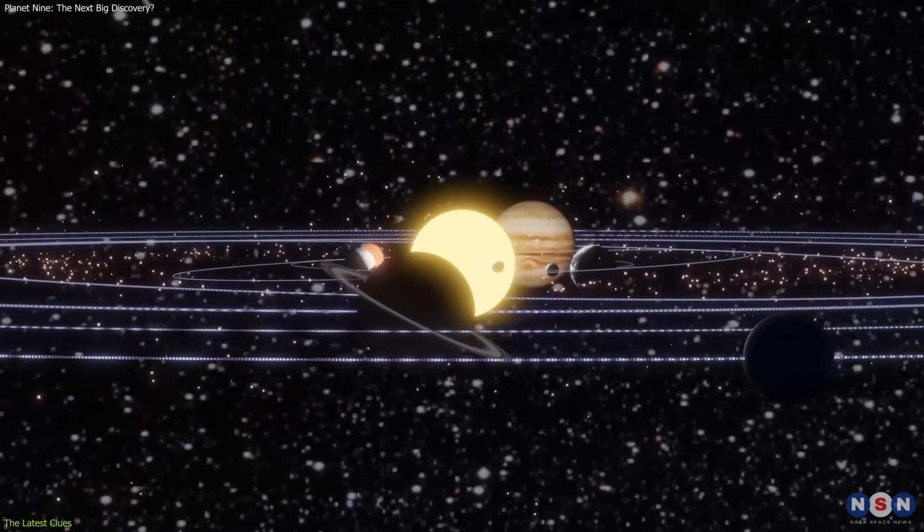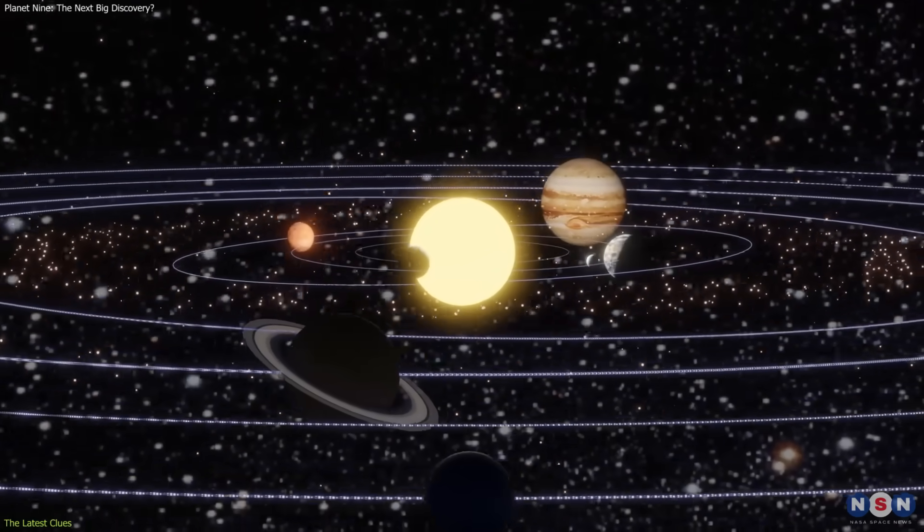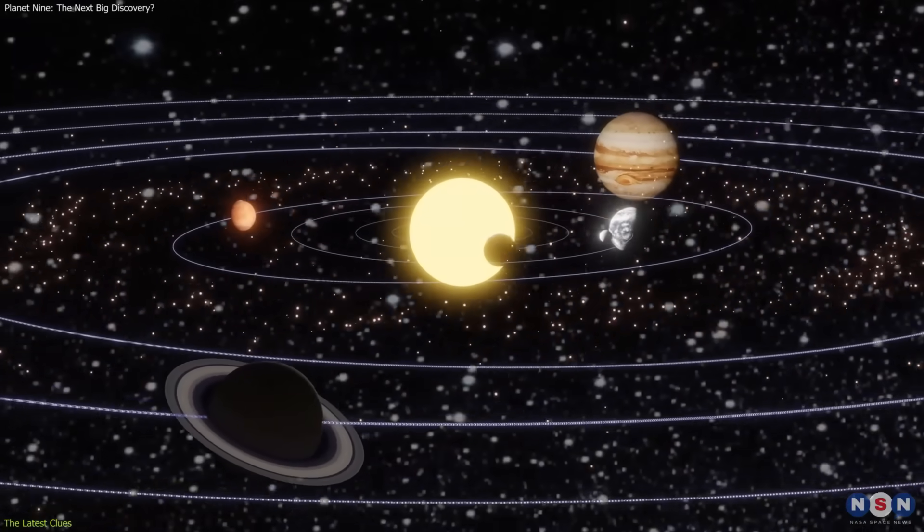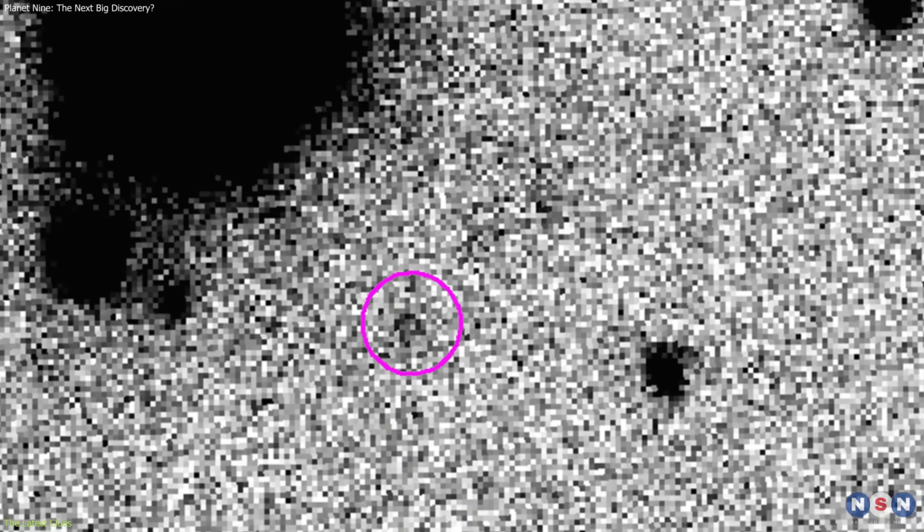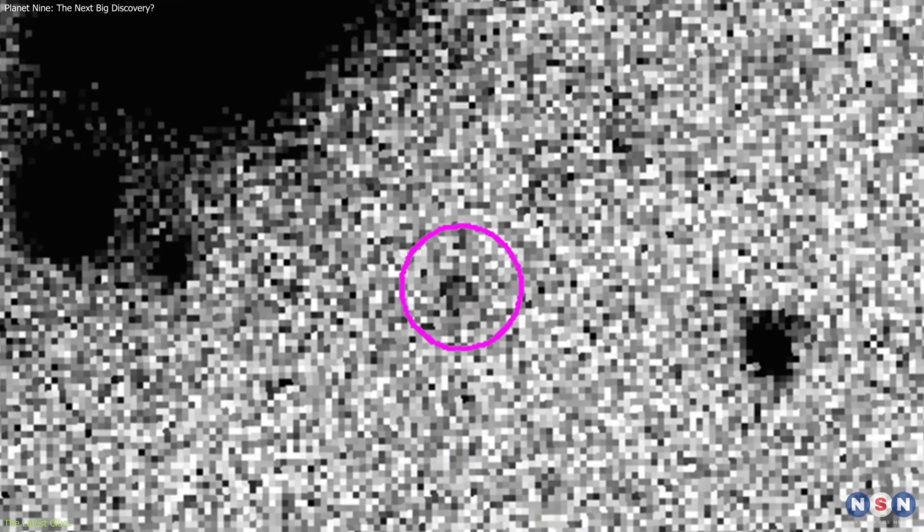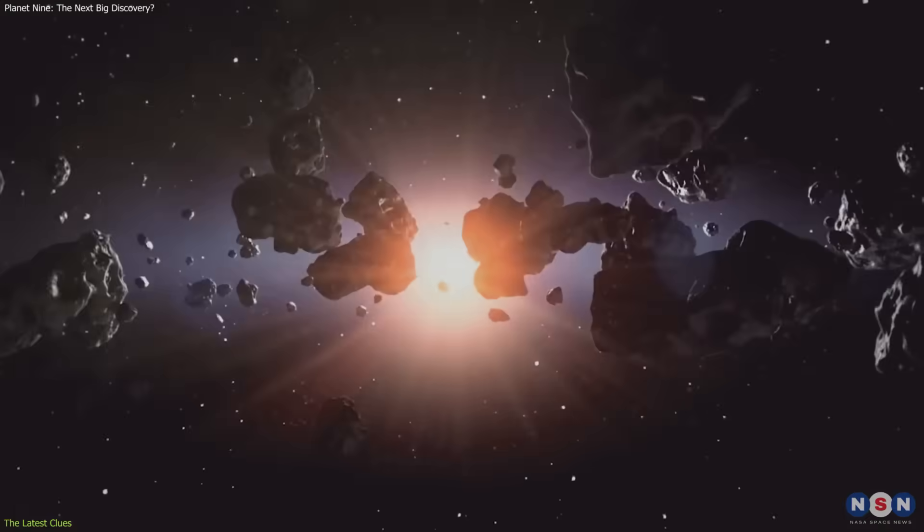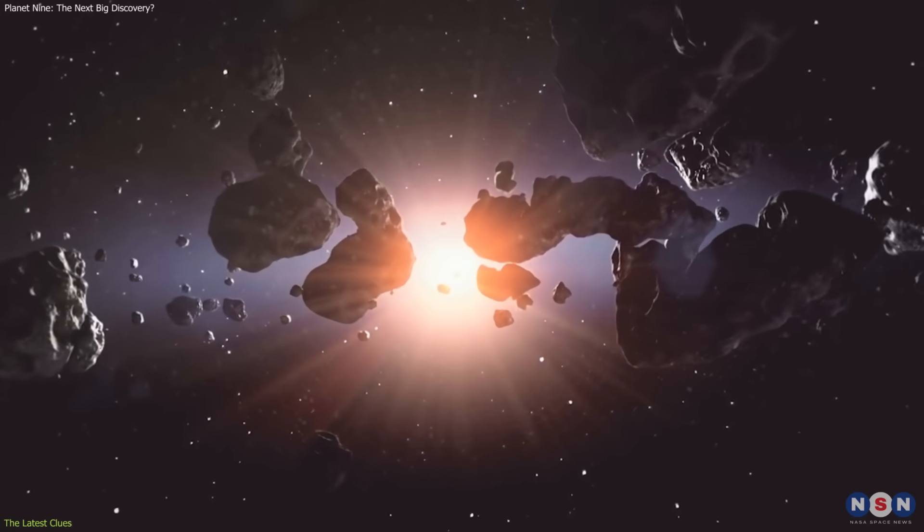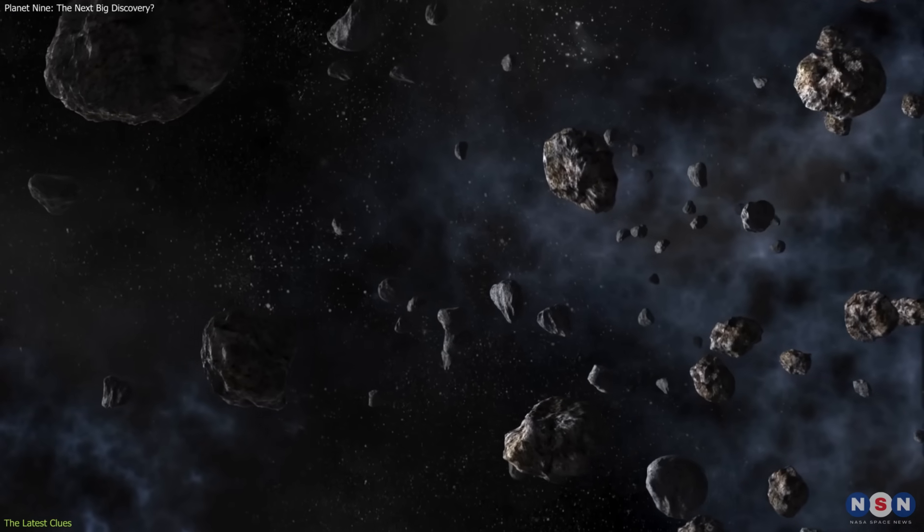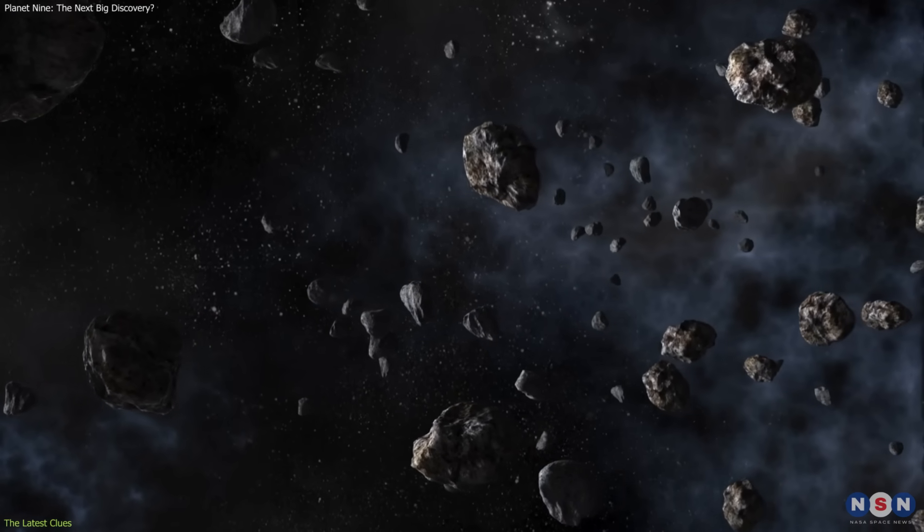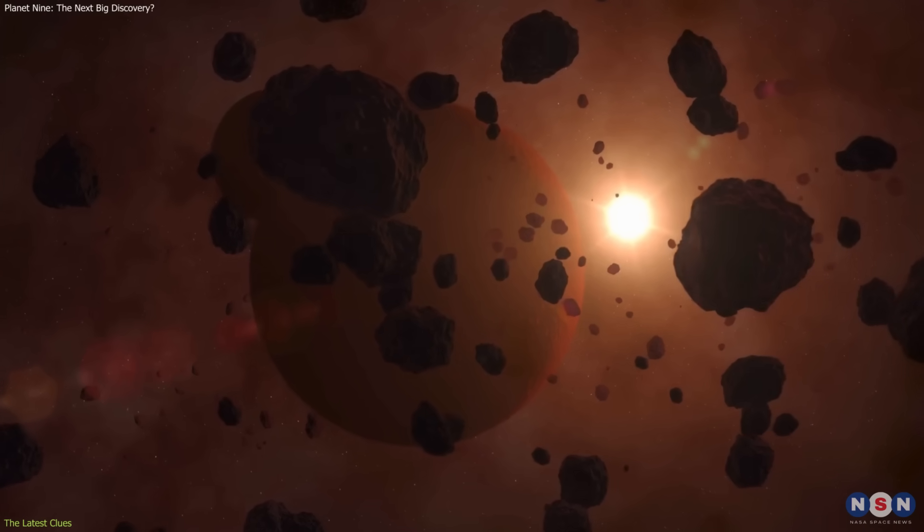Adding to the complexity, discoveries in the outer solar system have not always supported the Planet 9 picture. The Subaru Telescope found a distant dwarf planet nicknamed Ammonite with an elongated stable orbit. Rather than strengthening the clustering argument, Ammonite seemed to weaken it, suggesting the outer solar system may be shaped by forces other than a single giant planet.